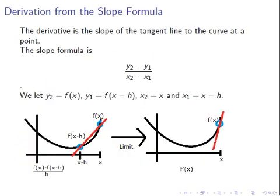The definition of the left-hand derivative comes from the slope formula. The derivative is the slope of the tangent line to the curve at a point. The challenge is to go from the slope of the secant line to the slope of the tangent line. We start with y2 minus y1 over x2 minus x1 — the change in y divided by the change in x — and we draw a picture of the secant line.